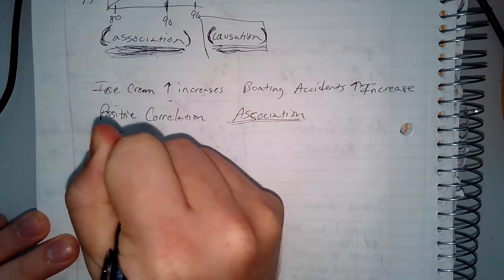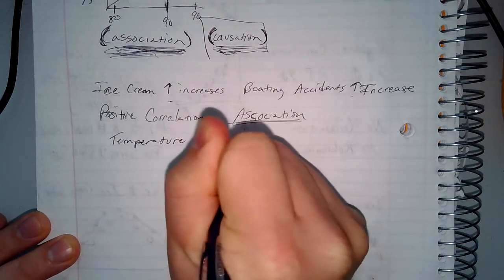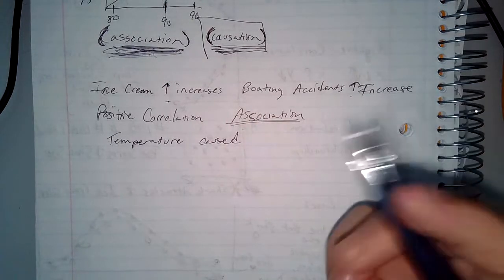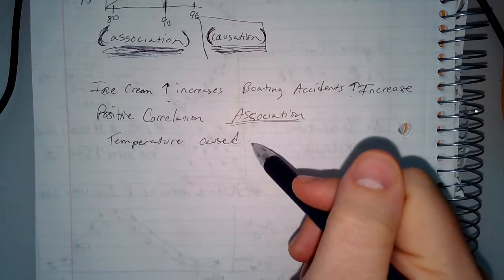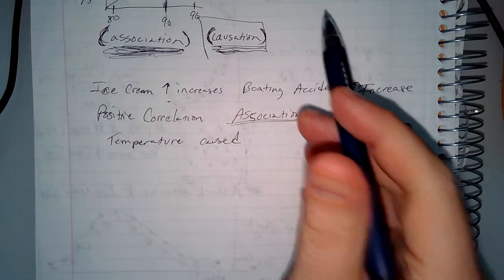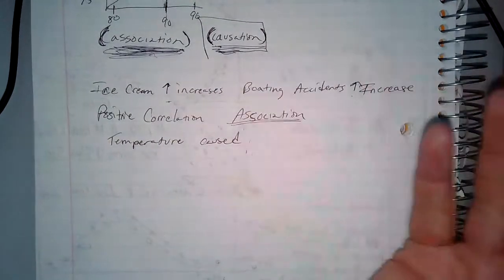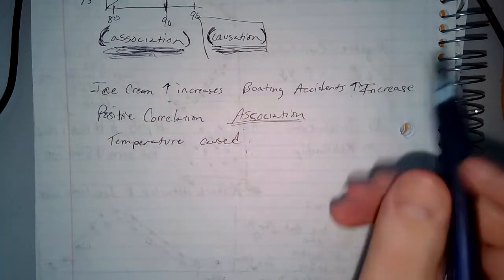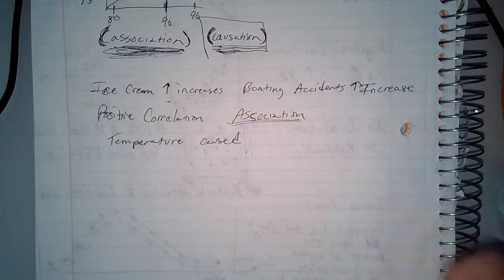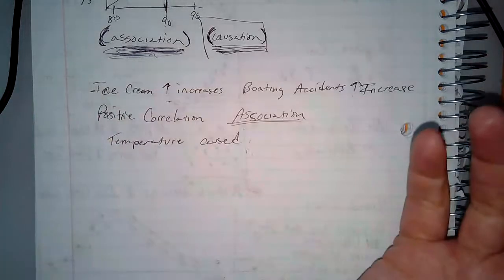Temperature is the cause. What makes us eat more ice cream? The temperature outside — when it gets hotter, we eat more ice cream. What makes more people go out on the boat? Great weather, temperature. When it's 85, 90, or 95 degrees outside, people go out on the boat. The more people on the lake, the more accidents happen.